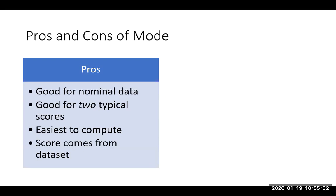Another pro: the mode is good when you have two distinct patterns. If psychology and biology were equally likely, you can't have two means — but you can have two modes. You could say psychology and biology were both equally likely to be the most commonly selected major. And the mode is also the easiest measure to compute — all you have to do is count.